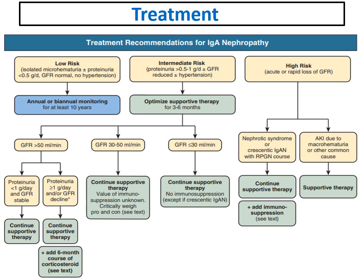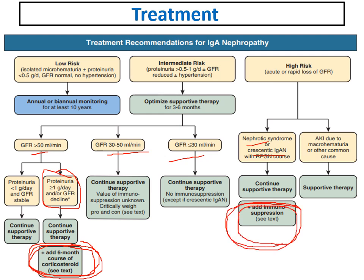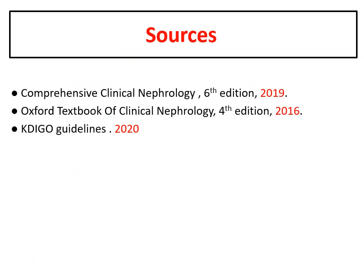In summary: low-risk patients require monitoring; intermediate-risk patients receive maximal supportive therapy for three to six months, and if there is persistent proteinuria with GFR more than 50, steroids can be added. If GFR is less than 50 or less than 30, steroids are not preferred. High-risk patients — especially those with nephrotic syndrome or crescentic IgA nephropathy — can receive immunosuppression with supportive therapy. Thank you.